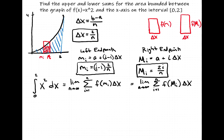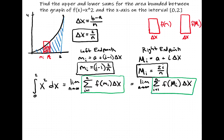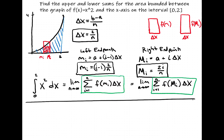Before we deal with the limit and the exact area, let's deal with the summations. We'll get an expression for the sum of the rectangles using left endpoints first, and then we'll do right endpoints. Let's get expressions for those sums, and then once we have all the work done, we can apply the limits.